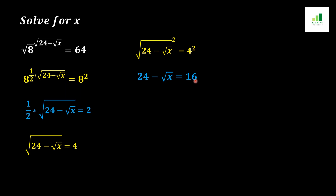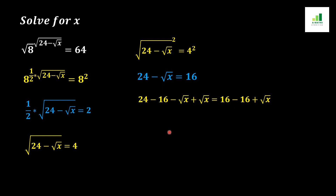In the next step, we subtract 16 from both sides. On the left side, 24 minus 16 remains, and we also add √x to both sides. The +√x and −√x cancel on one side, and the +16 and −16 cancel on the other side. After simplification, we get 24 − 16 = √x, which gives √x = 8.